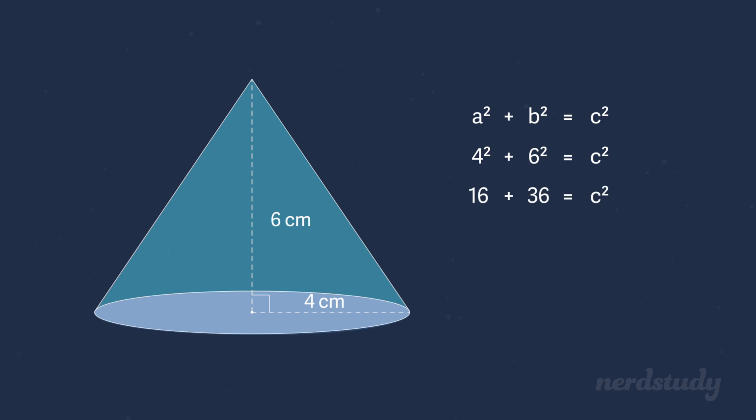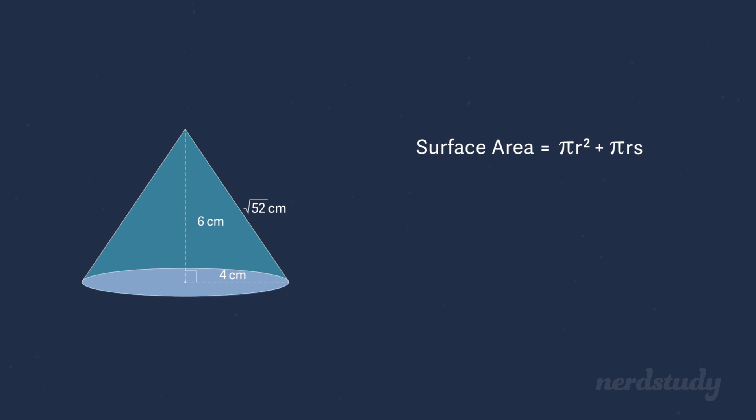Simplified to get 16 plus 36, which equals 52. We have 52 equals c squared, in which we square root both sides to get square root 52 equals c. So the length of the slant is square root 52. So let's write in the square root of 52 here and move on with our formula for finding the surface area of a cone.